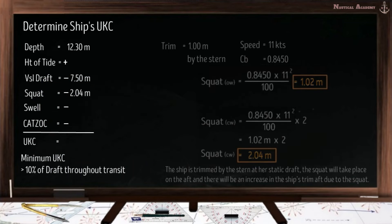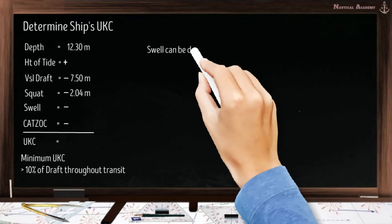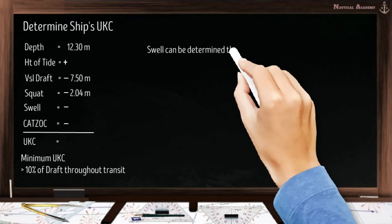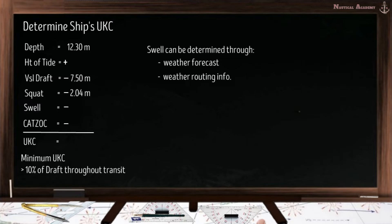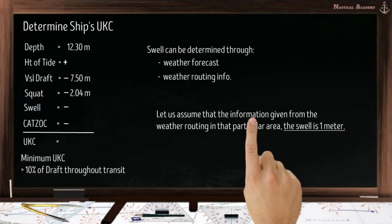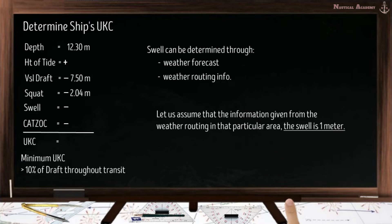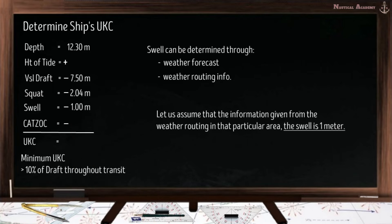Next is the swell. We can determine the swell value for a particular area through weather forecast or weather routing. Let us assume the weather routing gives a swell of 1 meter for that area, so we will subtract 1 meter from the depth of the water.